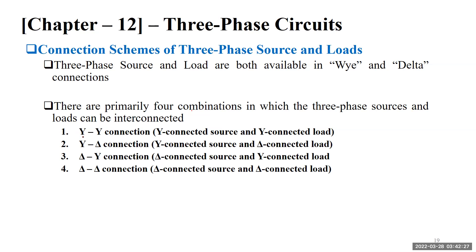The four connection options are: number one, Y-Y connection — the source is in Y and the load is also in Y. Second, Y-delta connection — source in Y, load in delta. Third, delta-Y connection — source in delta, load in Y. Fourth, delta-delta connection — both source and load are connected in delta configurations. We'll be solving numericals related to all four.